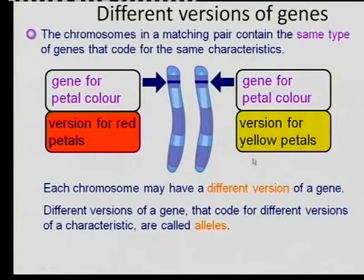So we have different versions of a gene, and that is what we call alleles. The term allele means a gene and its partner. An allelic pair is the two genes that code for a certain characteristic, such as petal color — one gene may determine red petal color and the other yellow. These two genes are called an allelic pair or two alleles.